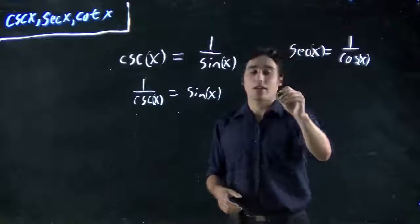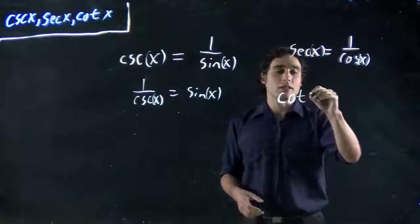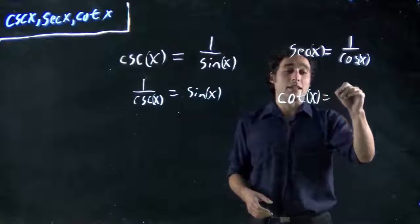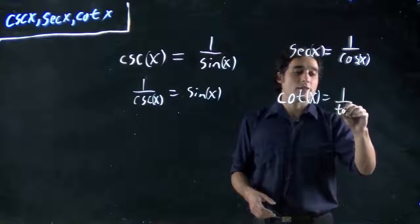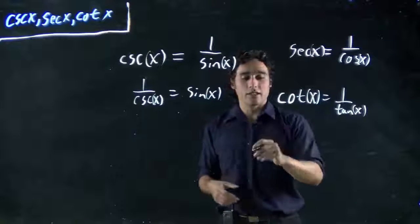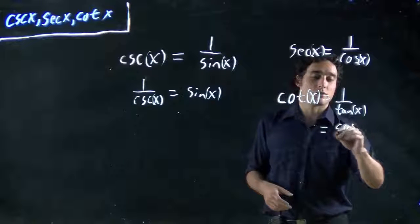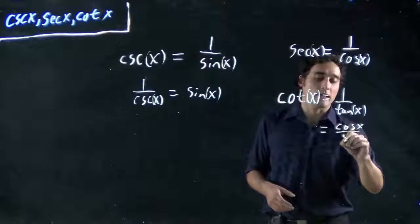And we can also say cotangent x. You're going to notice there's a kind of theme to this. Cotangent x is the same as 1 over tan x. Which, since tan x is sine over cos, we could also think this is the same as saying cos x over sine x.